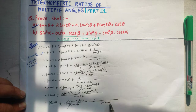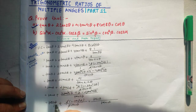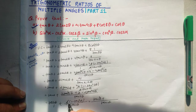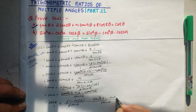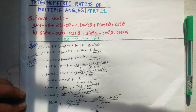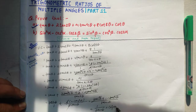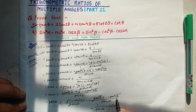Expanding: tan θ times tan θ is tan² θ, plus tan θ times 1, which is tan θ. Then 1 times 1 minus tan² θ gives 1 minus tan² θ. After cancellation, this equals 1 divided by tan θ, which is cot θ — our RHS. Hence proved.